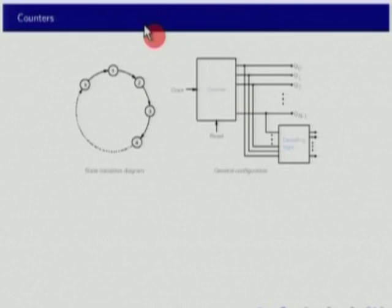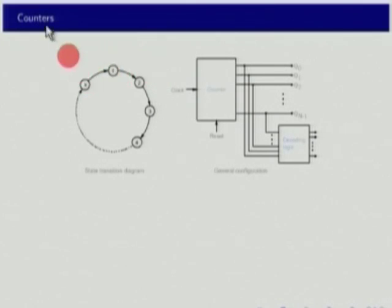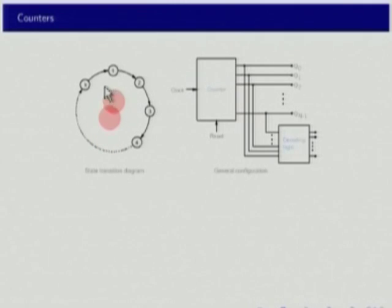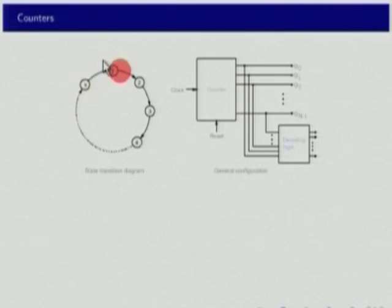The next important topic — and probably the most important topic — is counters. There are a lot of misconceptions about counters, so let us go through this very carefully. A counter is essentially characterized by something called a state transition diagram. This counter has states numbered 1, 2, 3, and so on up to state number k, after which it goes back to state number 1. All these states are distinct.